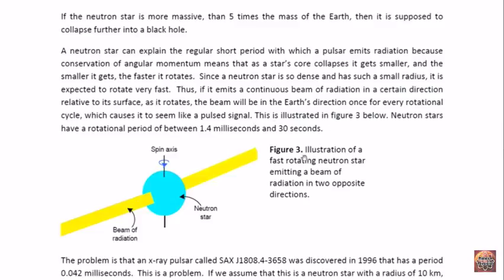This is what we illustrate here. It's rotating, and if the Earth is here somewhere, as it rotates, eventually the beam will be facing Earth, and we will see that pulse, the light, and then it will go on, it will do another rotation, and then after another cycle, it will once again face the Earth, and we will see another pulse.